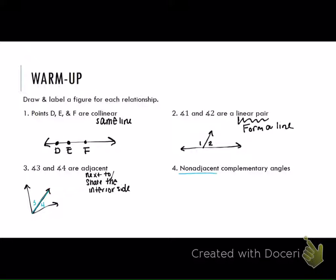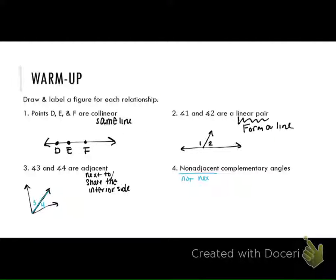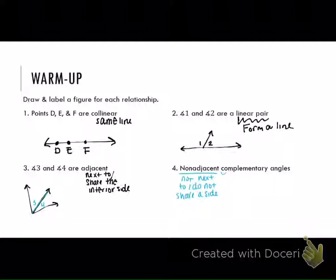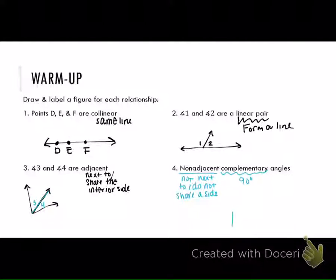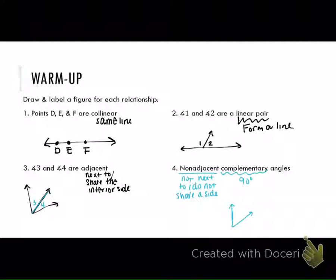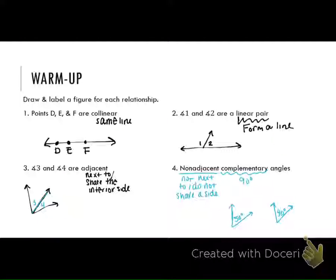Non-adjacent means two angles that are not next to each other — they do not share a side. Complementary is 90 degrees, and they're two angles that add to 90. So if I have one angle, let's say 50 degrees, what would the other angle have to be? 40 degrees — which means they add to 90. They are complementary.